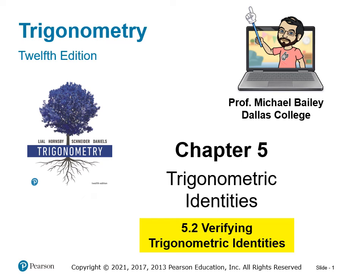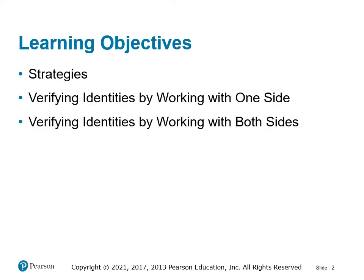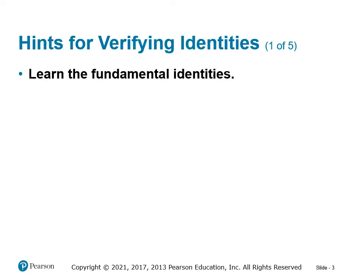Welcome to our second lecture in Chapter 5, section 5.2, where we'll be verifying trigonometric identities. We're going to look at some strategies, specifically how to verify identities by working one side of an equation or by working both sides.